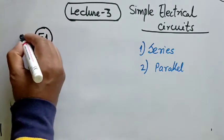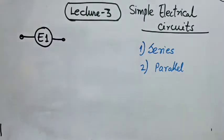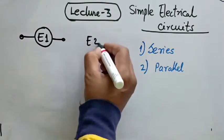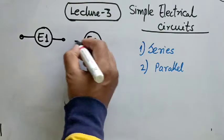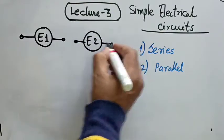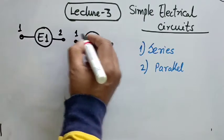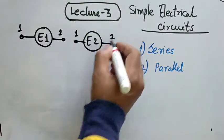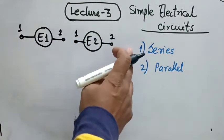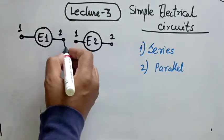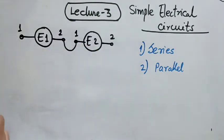Assuming we have an element E1 which has two terminals, and suppose we have another element E2 which again has two terminals. We name the terminals as 1 and 2. In series connection of circuits, if we connect these two terminals in this fashion, it becomes a series electrical circuit.